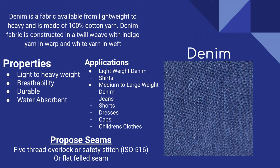Some disadvantages of denim fabric are that it's warm and insulating, which isn't always a bad thing, and it stretches out over time. It's also a bit harder to decorate and sew. Lightweight denim is mainly used for light jackets or shirts, whereas medium to heavy weight denim is used for jeans, shorts, dresses, caps, children's clothes, and heavy duty jackets. The proposed seam for denim is a five-thread overlock, safety stitch, or a flat-fell seam.